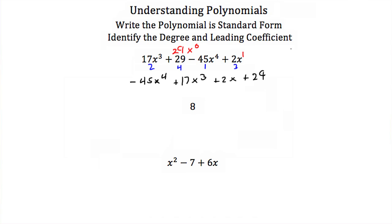So written in standard form, it's: negative 45x to the fourth plus 17x cubed plus 2x plus 29. Our degree is just the highest exponent in the polynomial — in this case it's 4, so our degree is equal to 4. Our leading coefficient is the number multiplied by our highest exponent term. Our highest exponent term is x to the fourth, which is multiplied by negative 45, so our leading coefficient is equal to negative 45.